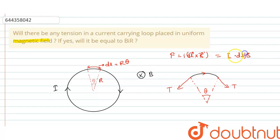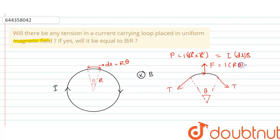This force acts in the vertically upward direction according to the right-hand thumb rule: dl is in this direction, B is inward, so dl×B is upward. This force equals i·R·θ·B, and it is balanced by the downward component of the tension.